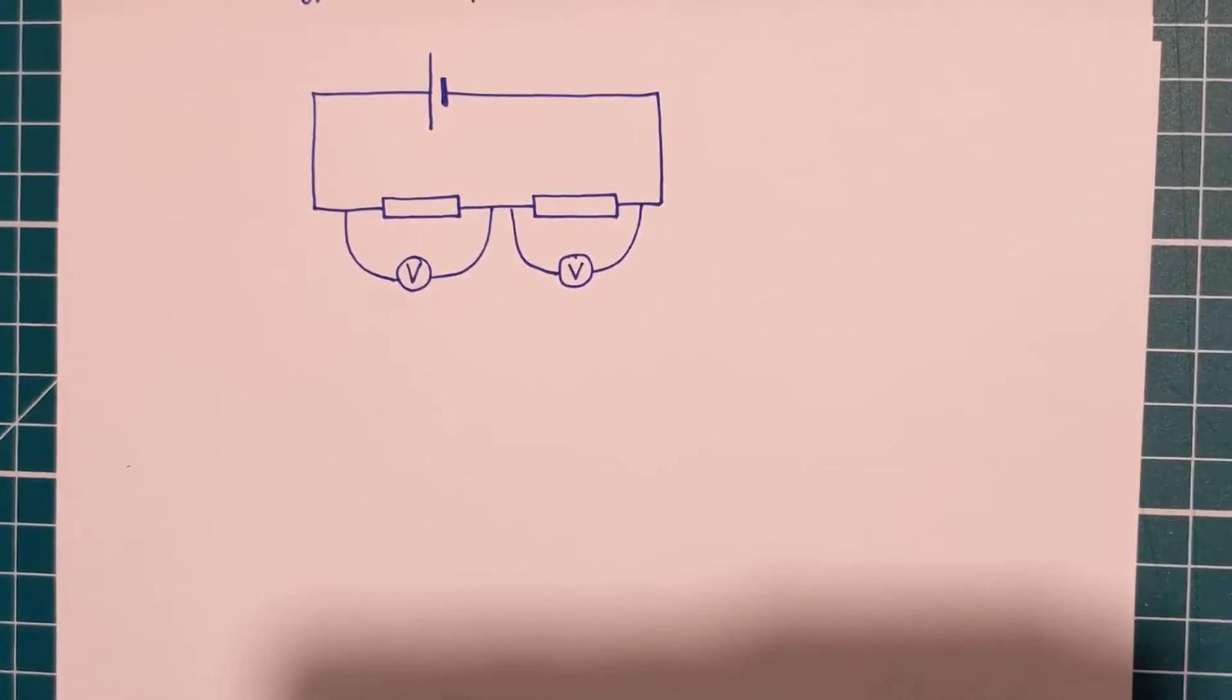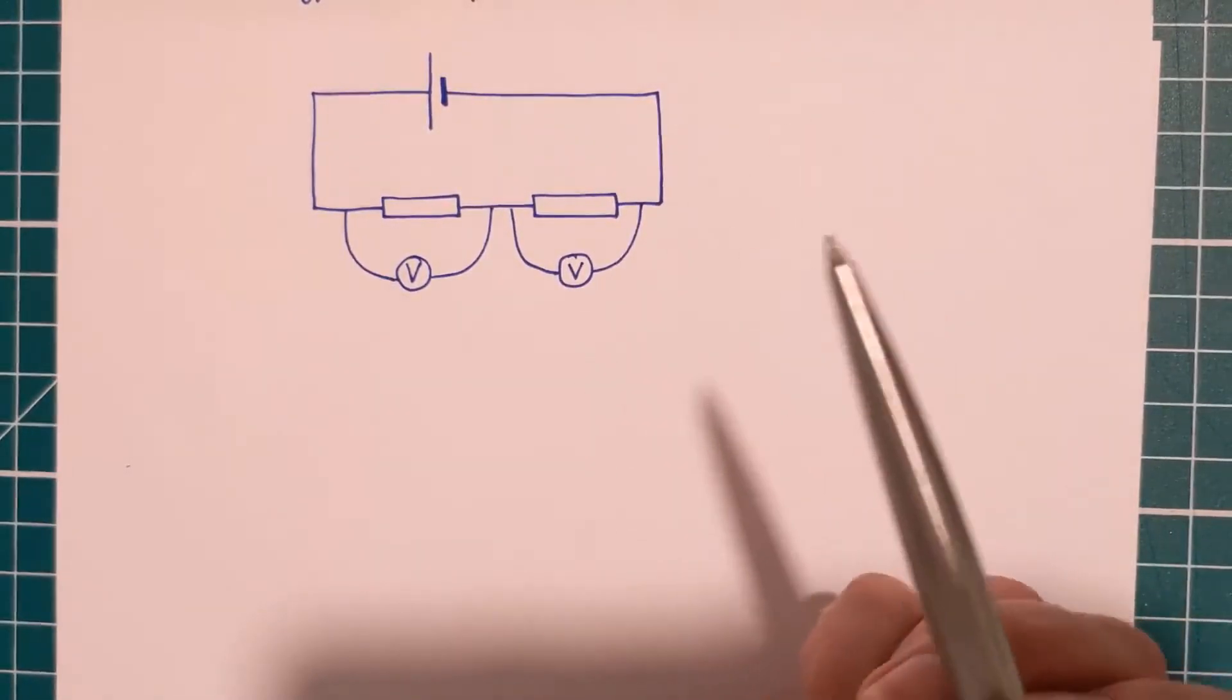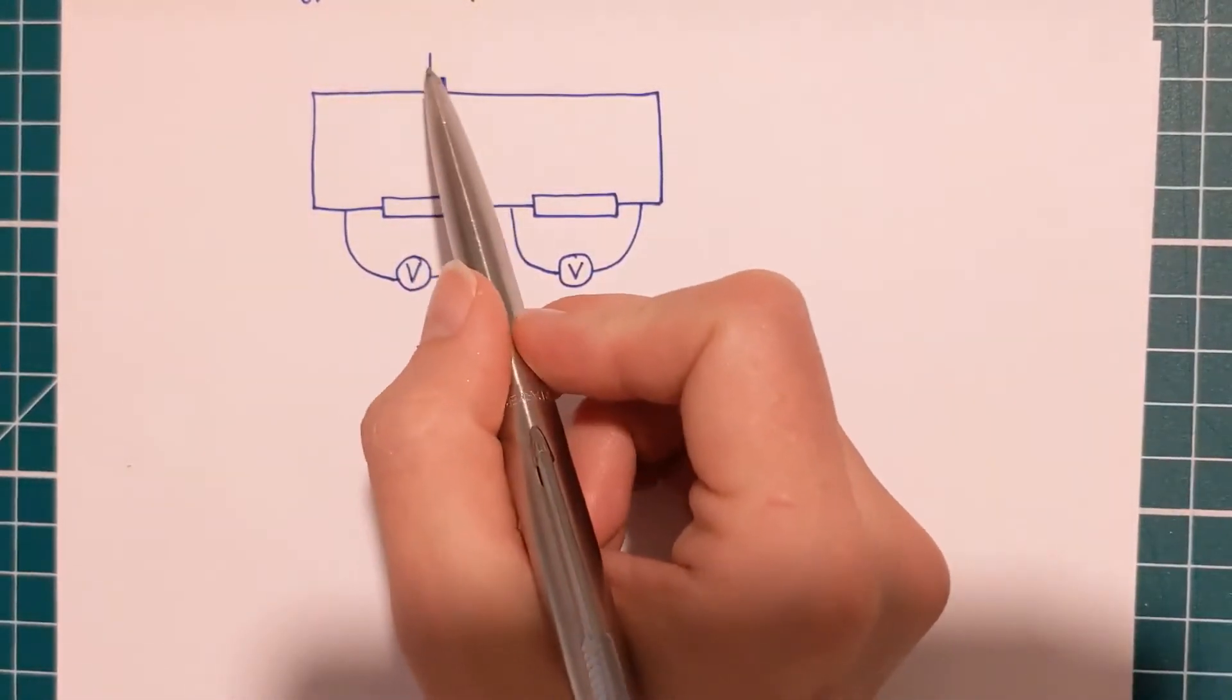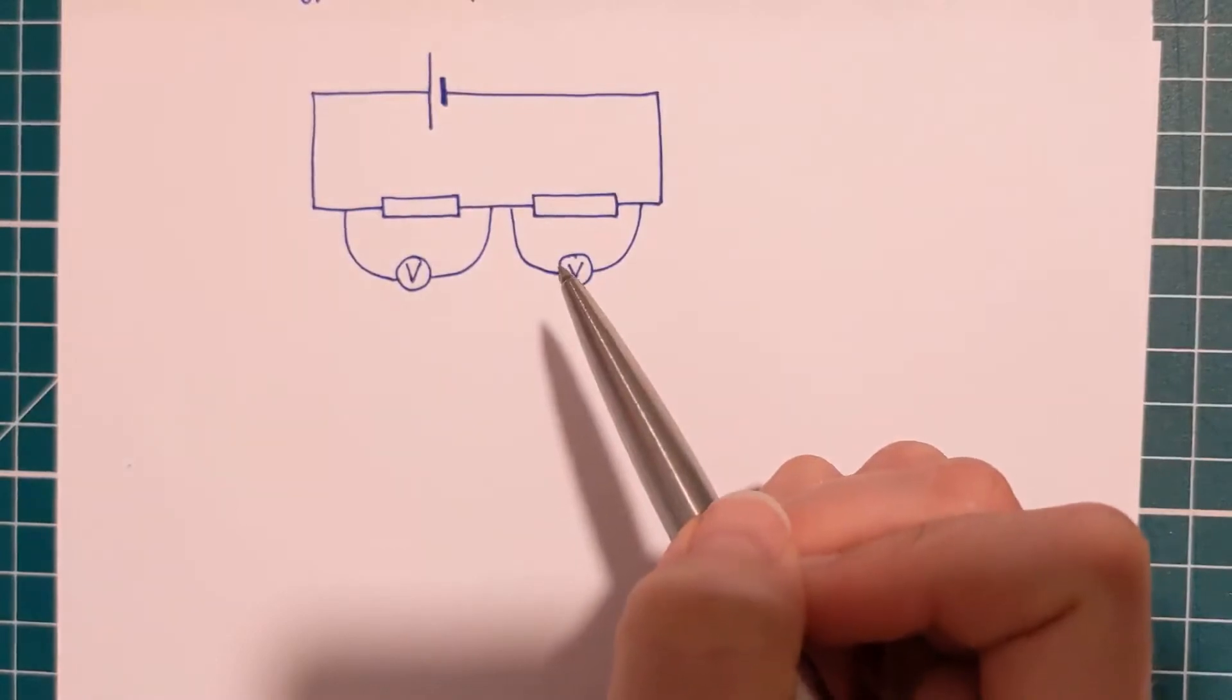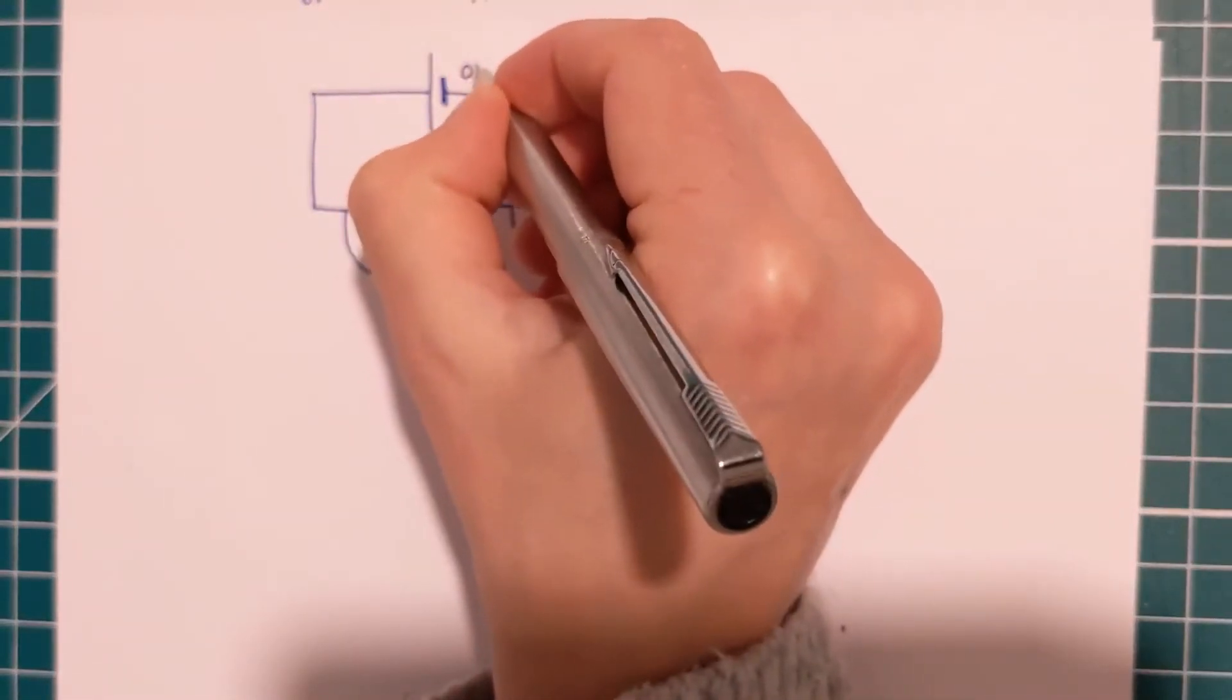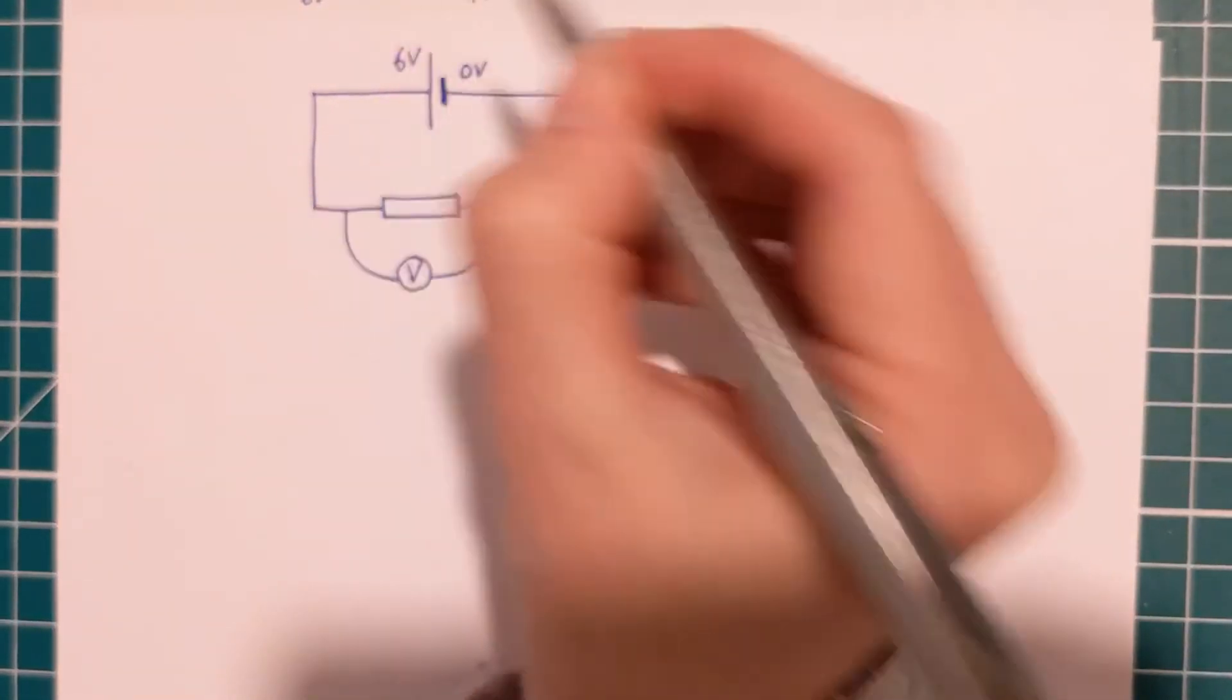Another important thing to say about potential dividers is that when we say potential difference, we do mean difference in potential. So let's say that this cell was a six-volt cell. That means that if we say the potential here is zero volts, then on the other side, it's six volts.